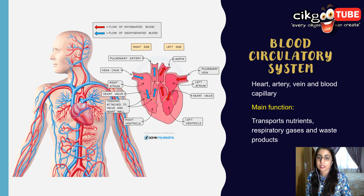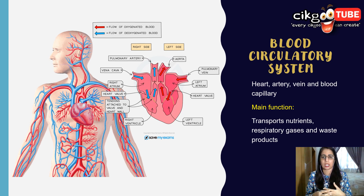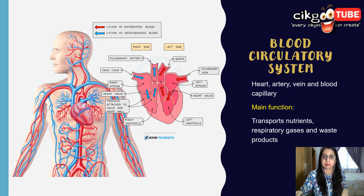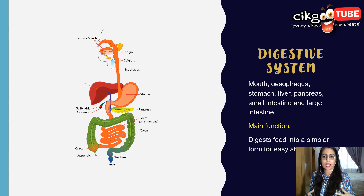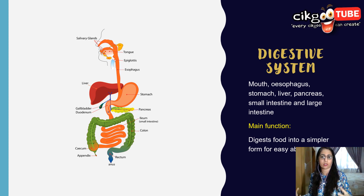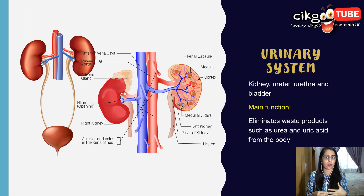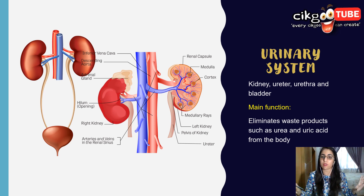The blood circulatory system consists of the heart, blood, arteries, veins, and blood capillaries — its function is to transport nutrients, respiratory gases, and waste products throughout the body, covered further in Chapter 10. The digestive system consists of the mouth, esophagus, stomach, liver, pancreas, small intestine, and large intestine, and functions to digest complex food into simpler molecules for easy absorption. The urinary system eliminates waste products such as urea and uric acid from the body, and consists of the kidneys, ureter, urethra, and bladder.